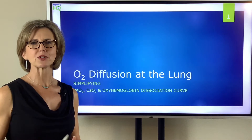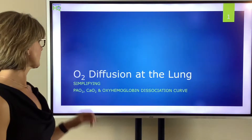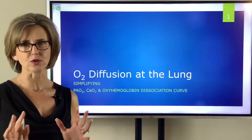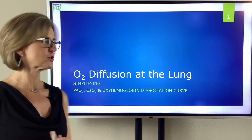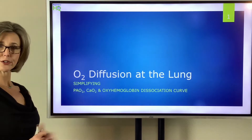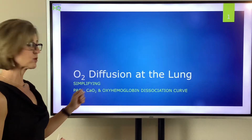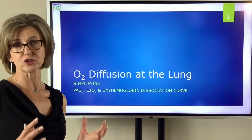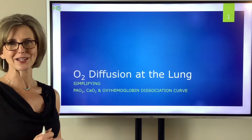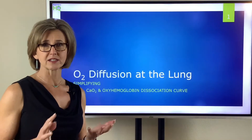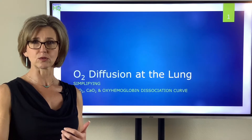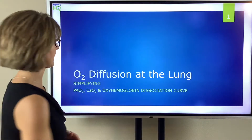Welcome to Respiratory HQ. I'm Tanya Peele and today I want to talk to you about oxygen diffusion at the lungs. I specifically want to talk about three things that are often really confusing to respiratory therapy students: PAO2 or arterial oxygen pressure, O2 content or the amount of oxygen that the blood carries to the tissue, and the oxygen hemoglobin dissociation curve. I want to talk about these from a practical standpoint — how you can apply this to clinical practice.